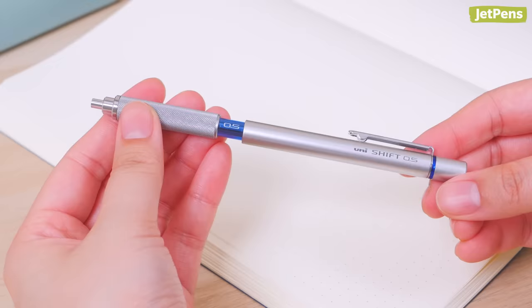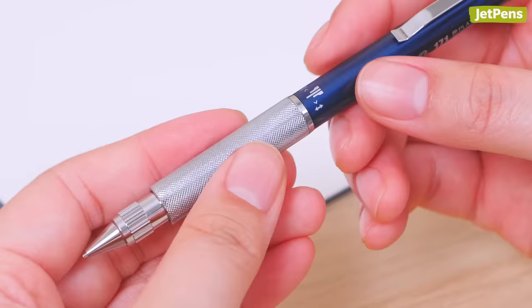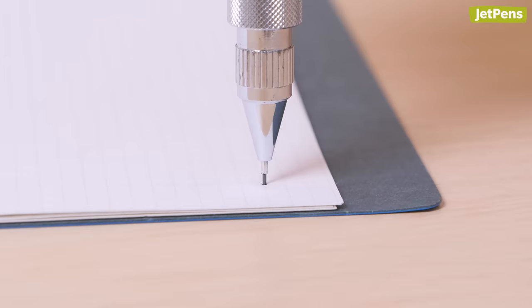Pressure Absorbing Spring Mechanism Platinum Pro Use 171 Drafting Pencil. Never break lead again with the Platinum Pro Use 171 Drafting Pencil. It has a special spring mechanism in its tip that can be activated to reduce lead breakage. If you apply too much pressure, the spring mechanism helps the lead slide back slightly.